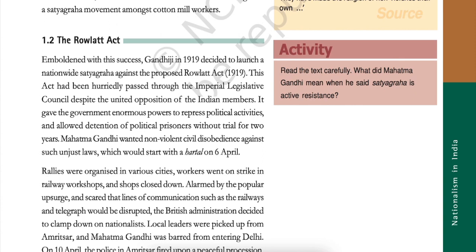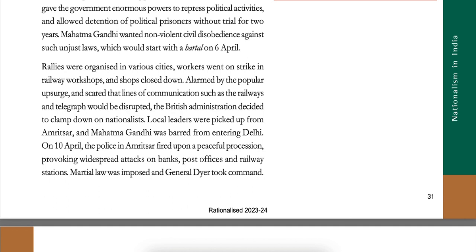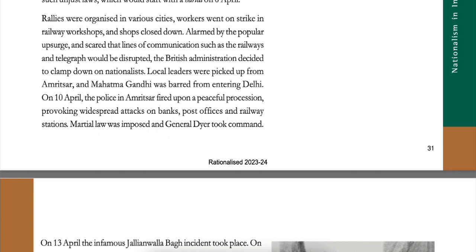The Rowlatt Act. Emboldened with this success, Gandhiji in 1919 decided to launch a nationwide Satyagraha against the proposed Rowlatt Act. This act had been hurriedly passed through the Imperial Legislative Council despite the united opposition of Indian members. It gave the government enormous power to repress political activities and allowed detention of political prisoners without trial for two years. Mahatma Gandhi wanted non-violent civil disobedience against such unjust laws, which would start with a Hartal on 6 April. Rallies were organized in various cities, workers went on strike in railway workshops and shops closed down.